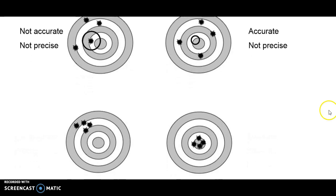If we look at these drawings down here, we can see all four shots here are consistently off the target. Because they're consistently off the target, it's not accurate. But because it's reproducible, it's considered precise.